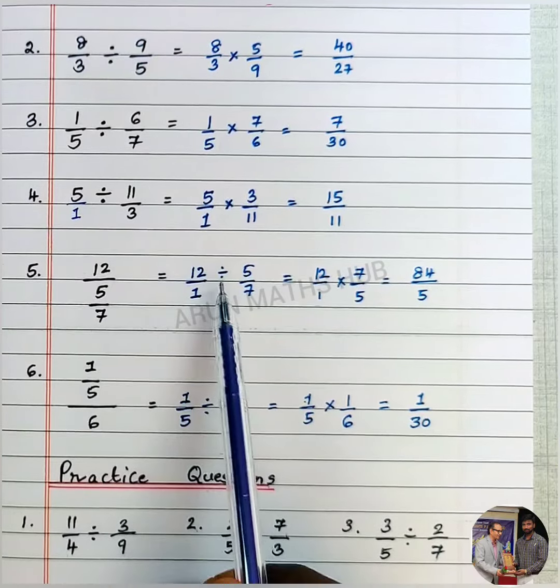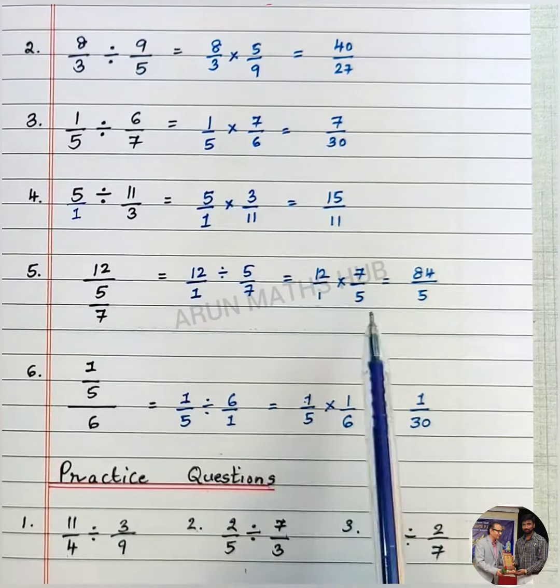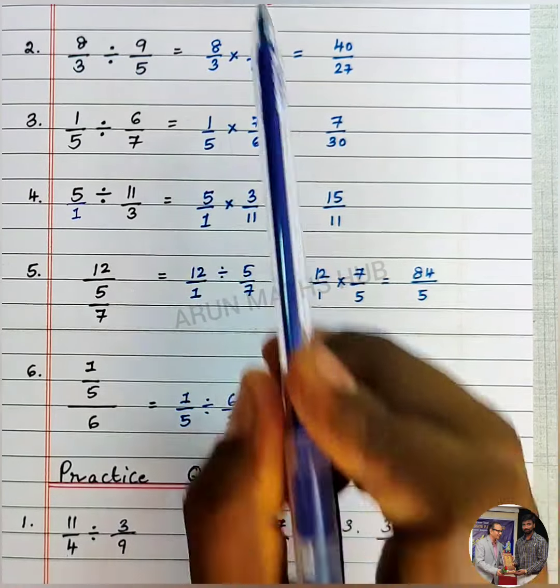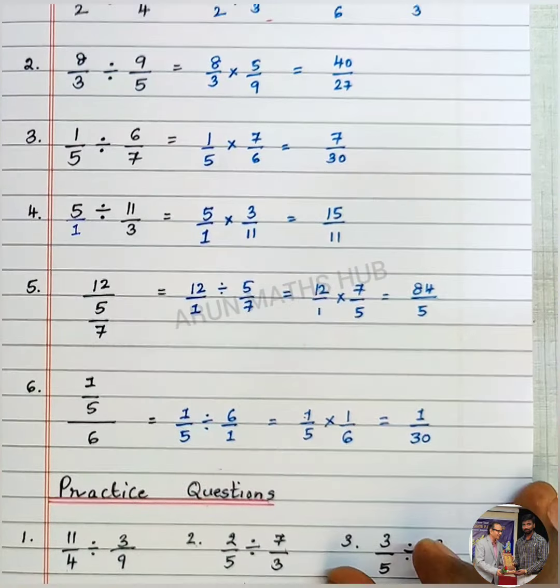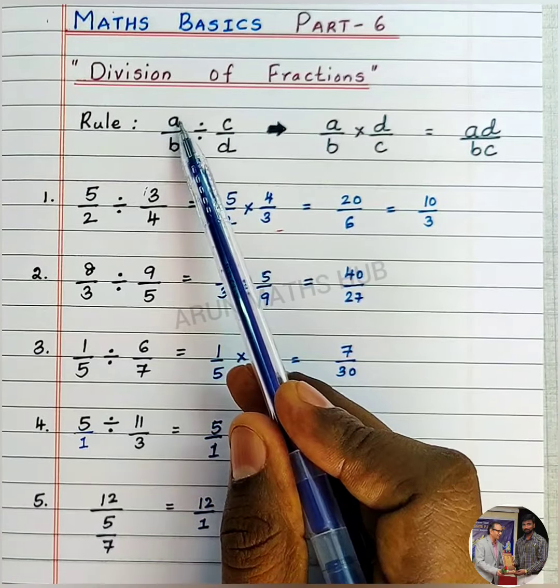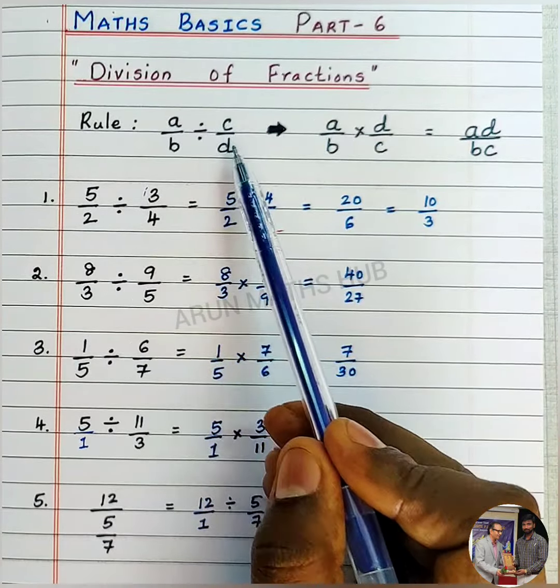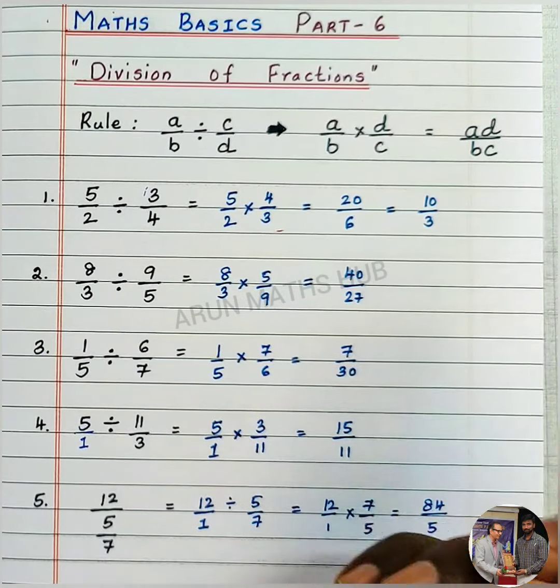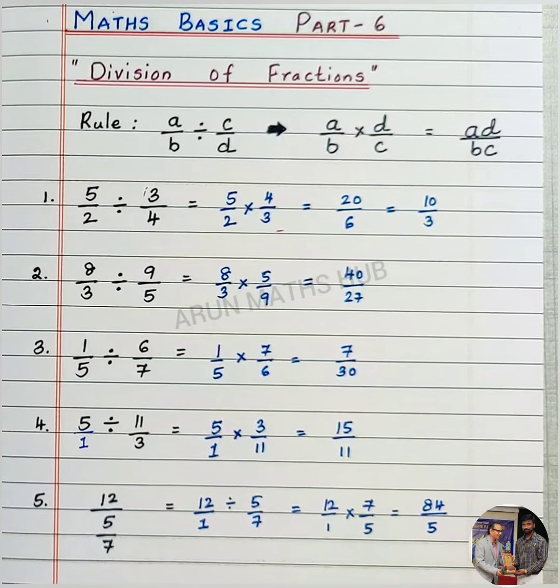You should be very careful. Always if you see the problems in this form, that is using division symbol, then division becomes multiplication. By using the above rule, you should understand this rule students: a/b divided by c/d is written as a/b into d/c. You should understand this rule.